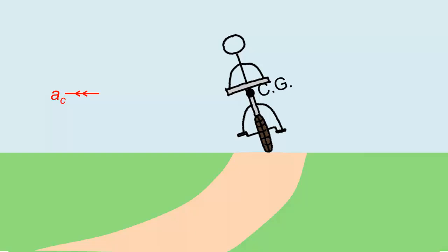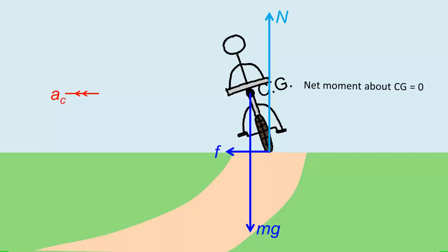By leaning into the turn, he positions his CG away from the normal contact force. This allows the normal contact force to produce an anti-clockwise moment to counter the frictional force's clockwise moment. The trick is to attain a net moment of zero.